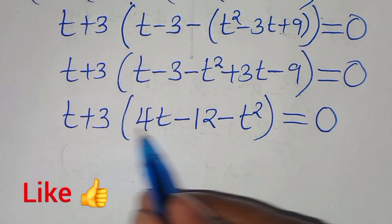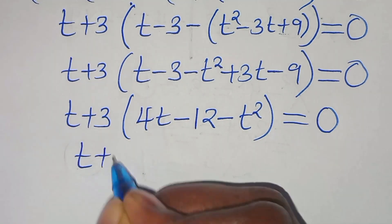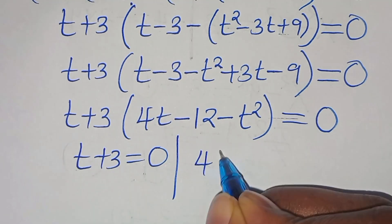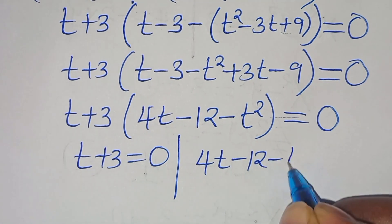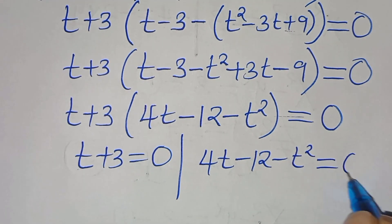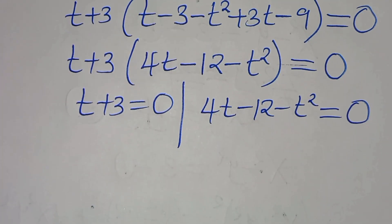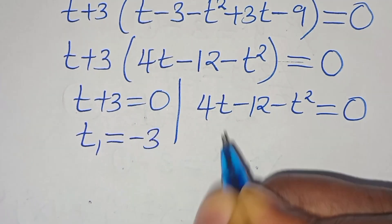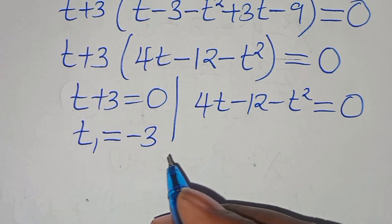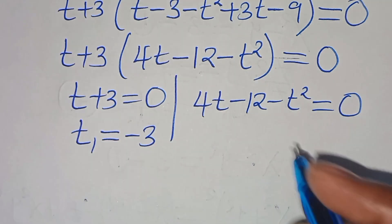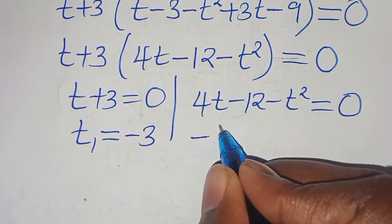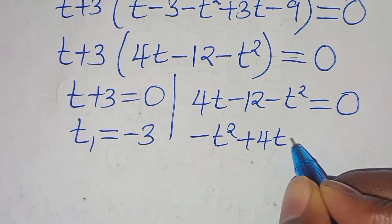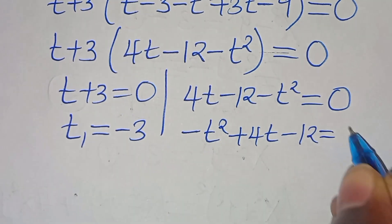So we have two parts here. The first part is t plus 3 equals 0, and the second part is 4t minus 12 minus t squared equals 0. From the first part, t is equal to minus 3. For the second part, we can rearrange as minus t squared plus 4t minus 12, this is equal to 0.